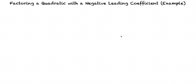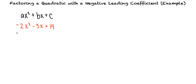This is an example video for factoring a quadratic with a negative leading coefficient. Quadratic expressions are written in the form ax squared plus bx plus c. Sometimes we're given problems where the leading coefficient a is negative, like in the following example: negative 2x squared minus 3x plus 14.